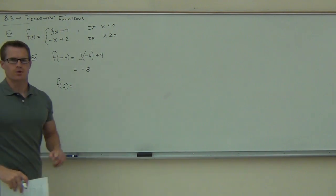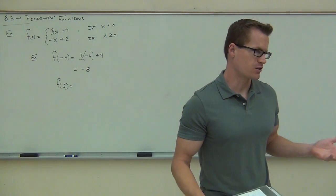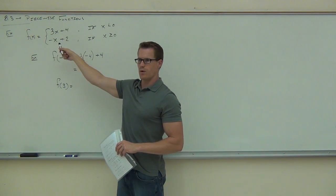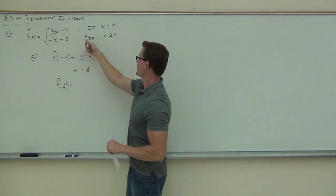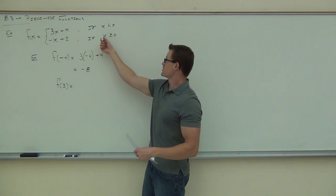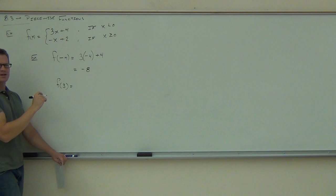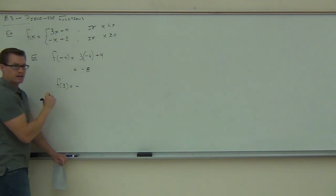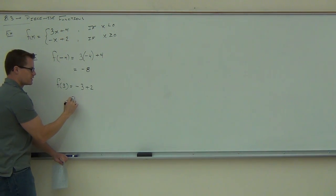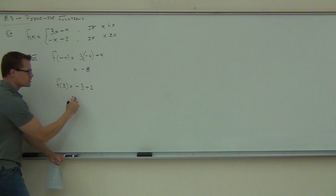How about f of 3? In this case x is 3, so should we use the top, the bottom, or both? Just one — because 3 is greater than zero. The top says use it if x is less than zero. Three is not less than zero; three is positive and greater than zero, so we use the bottom one only: negative 3 plus 2, which gives us negative 1.